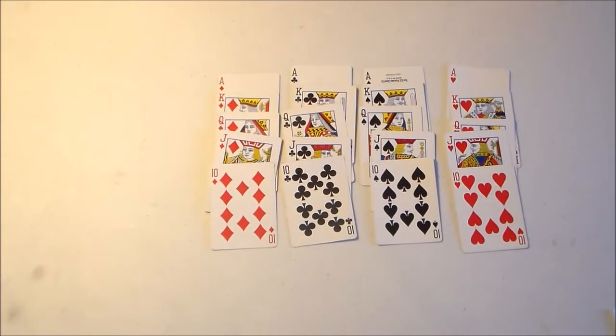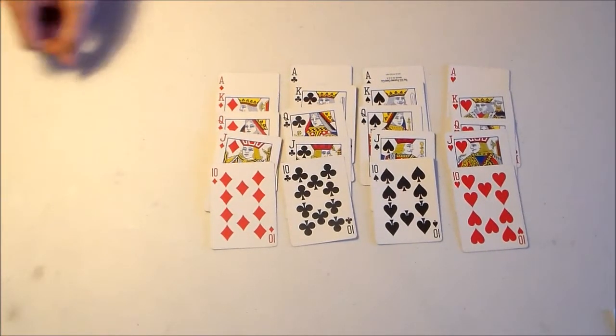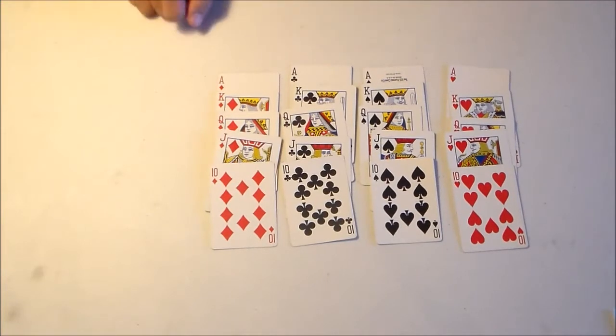Hello everyone. Today we're going to be doing a card trick. This card trick involves four piles with all suits and the ordering ace, king, queen, jack, ten of each suit.